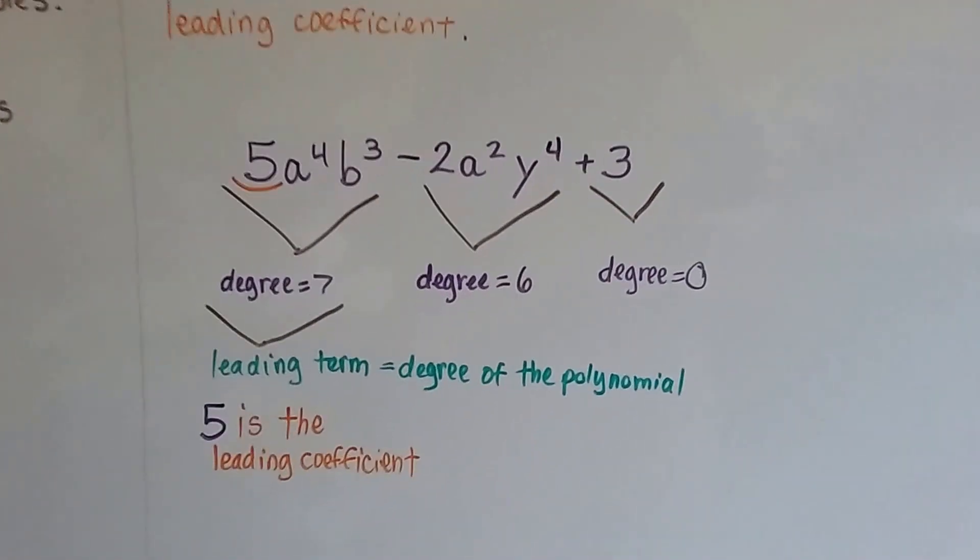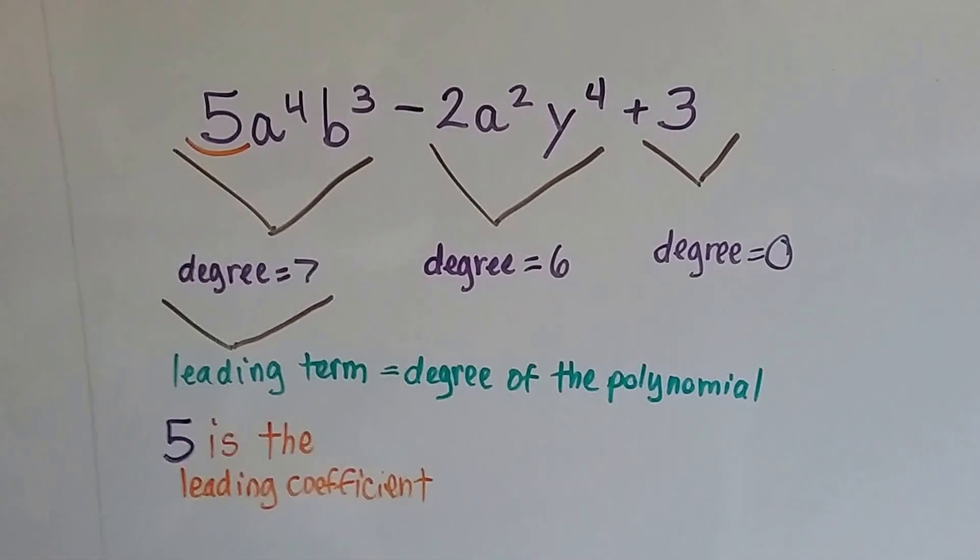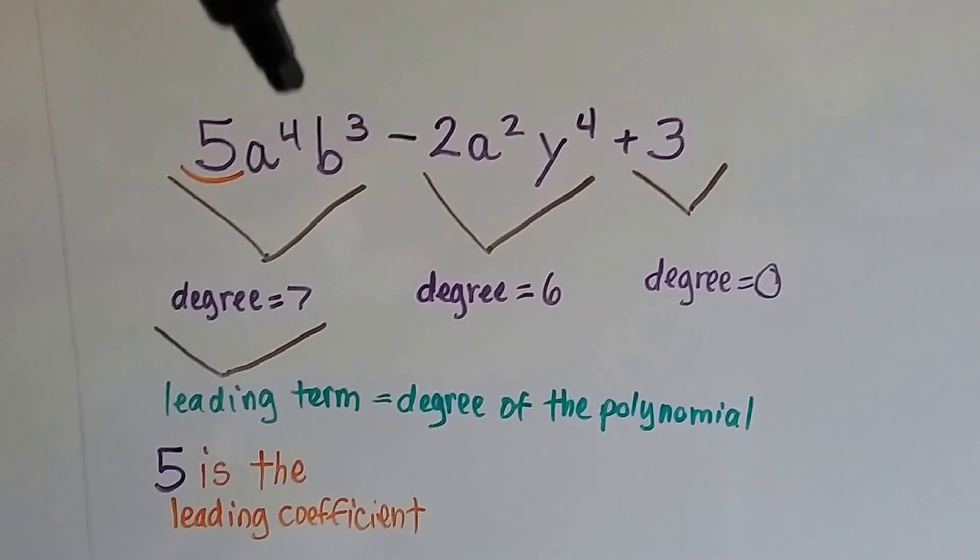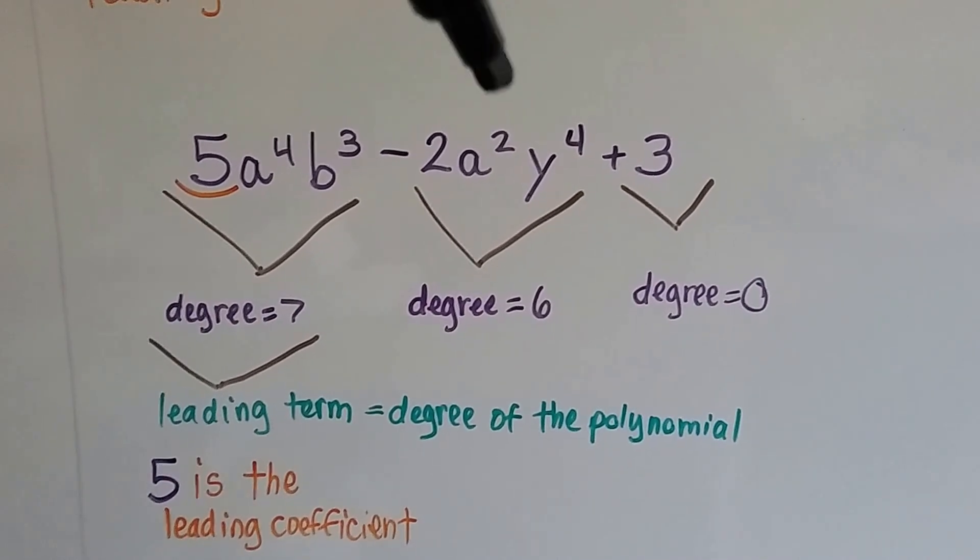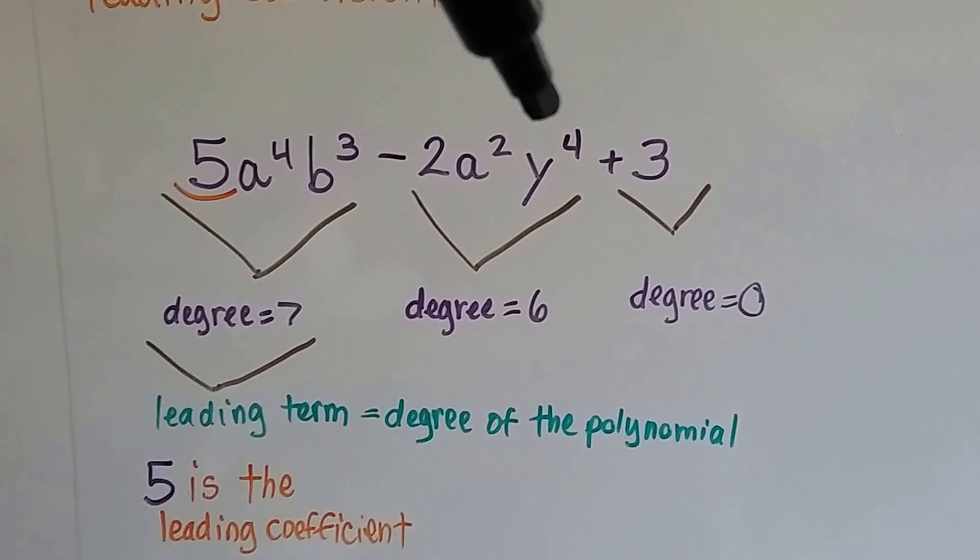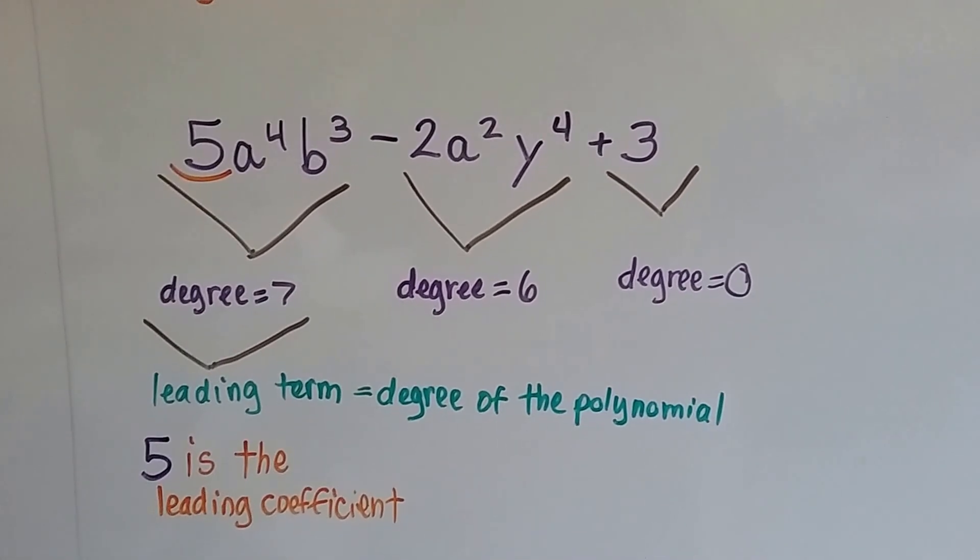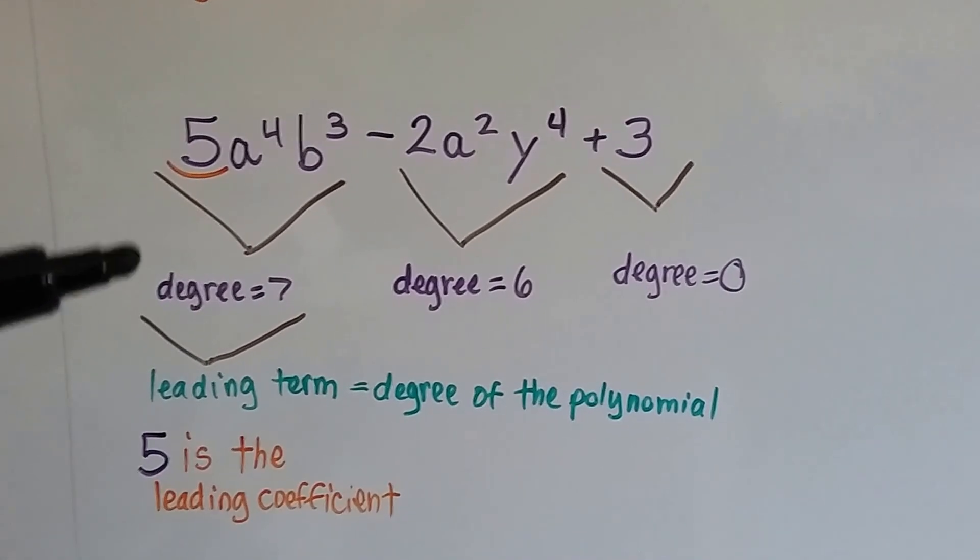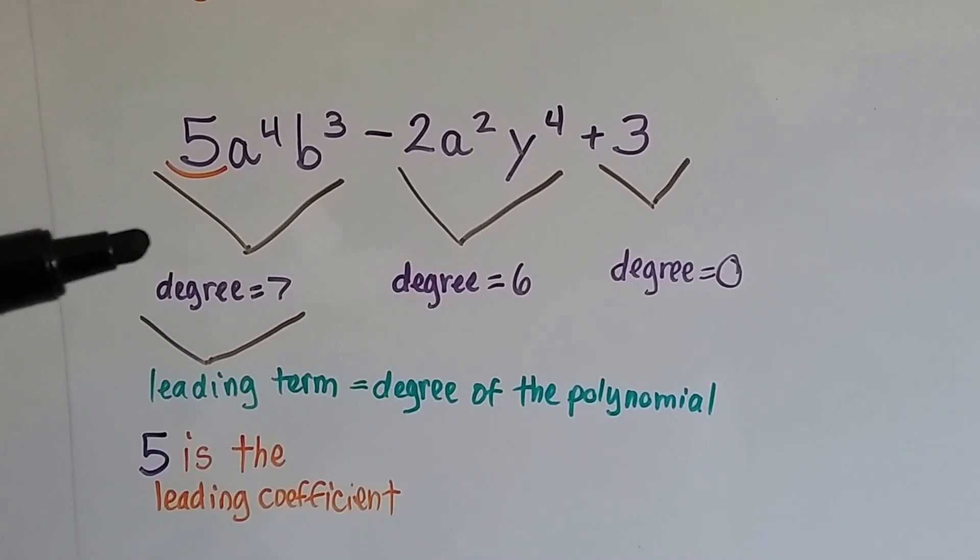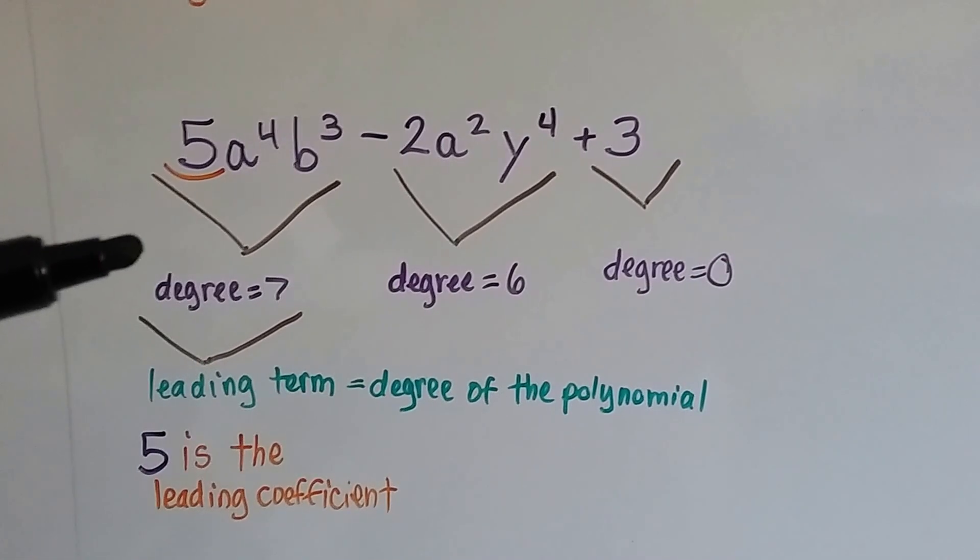And for this polynomial, the first term has a degree of 7, because 4 plus 3 is 7. This one's got a 6, because 2 plus 4 is 6, and this one's got a 0, because there's no exponent. This one ends up becoming the leading term, which is also the degree of the polynomial. This polynomial's degree is 7.